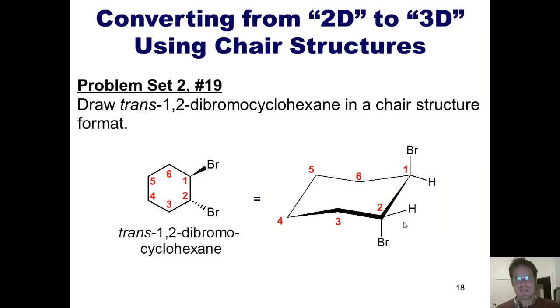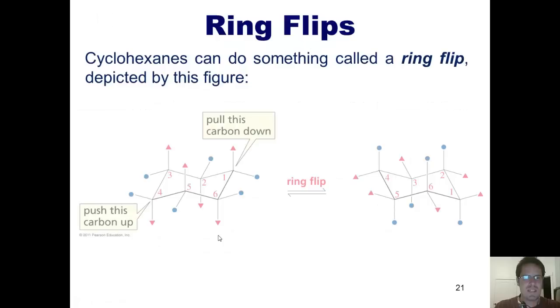Another way of converting from an unstable ring structure like the one shown here, in which our two larger substituents are both in axial positions instead of equatorial, is to do something called a ring flip, which is depicted by this figure.